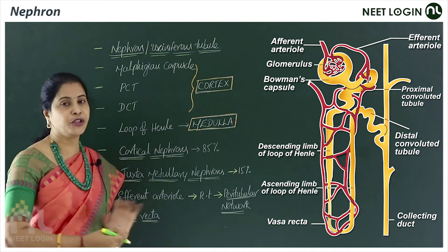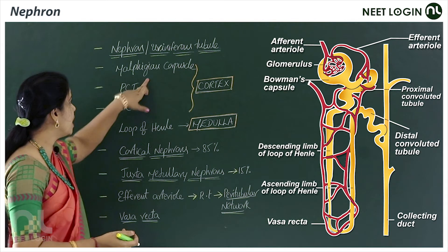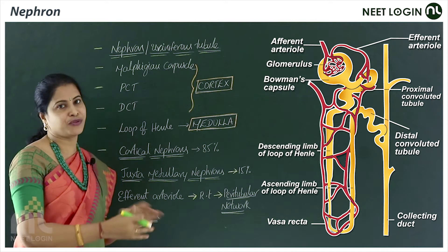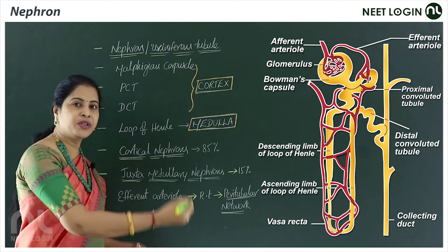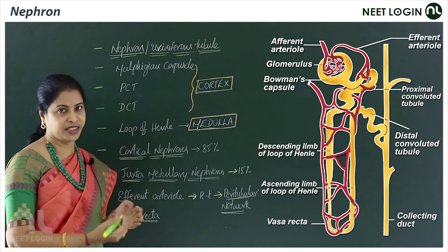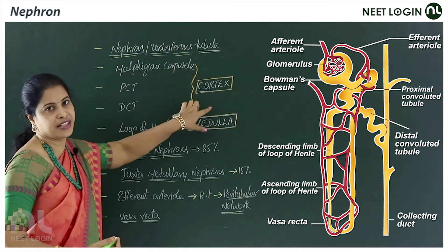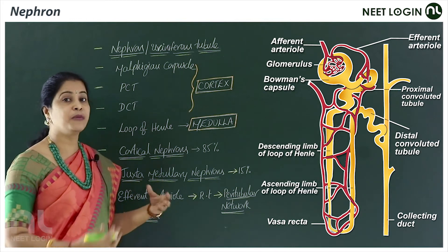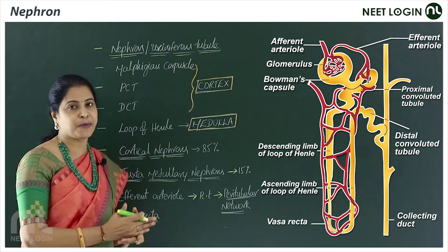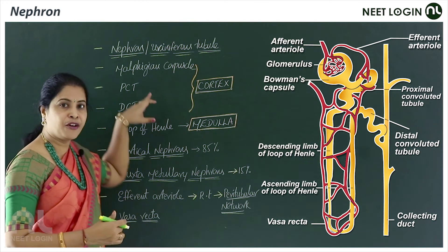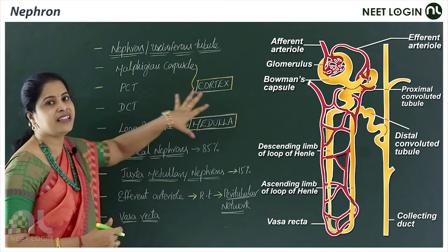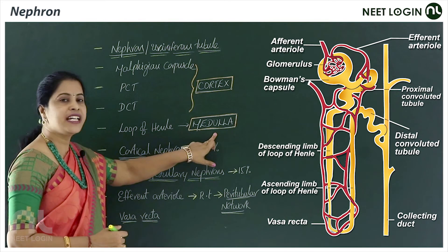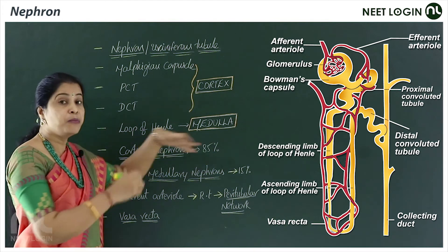The Malpighian corpuscle, PCT, and DCT are located in the cortex region of the kidney, while Henle's loop is located in the medullary region. Based on this, there are two types of nephrons. The Malpighian body is the glomerulus and Bowman's capsule together, and along with PCT and DCT, these are in the cortex. Henle's loop is in the medulla.